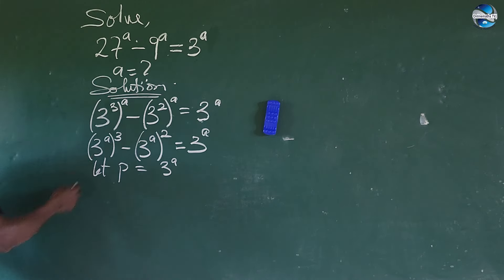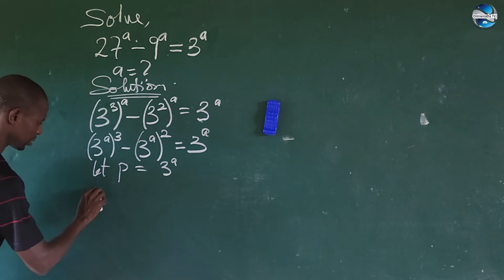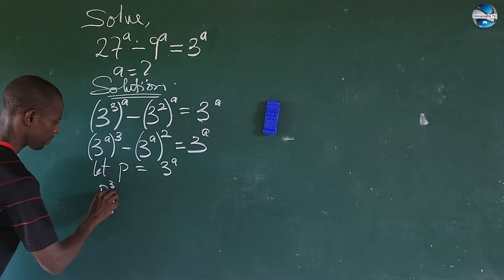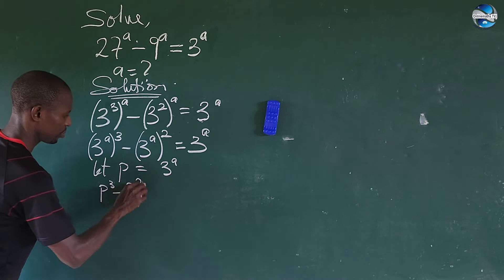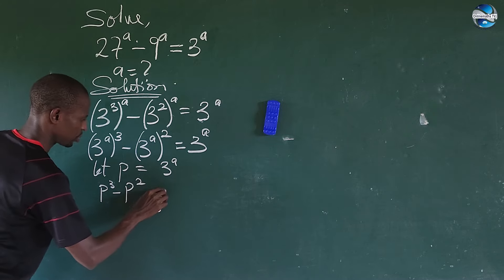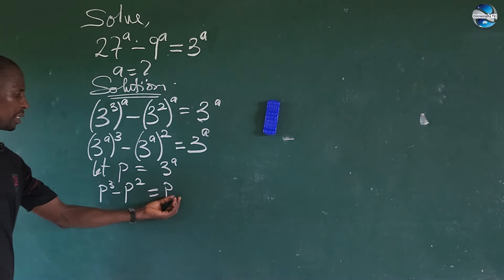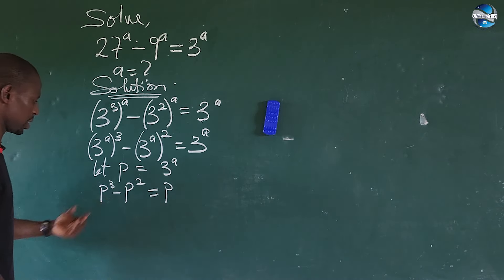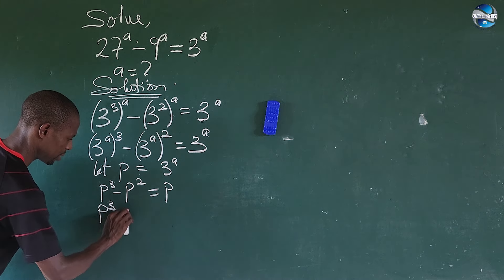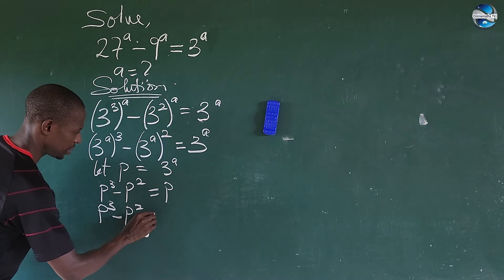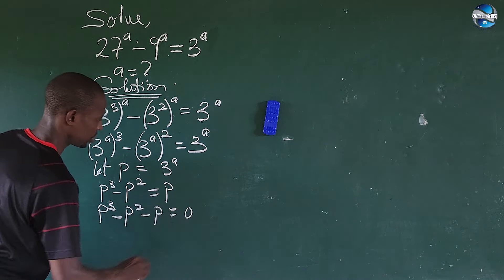So we can write the original equation as p^3 minus p^2 equals p. Moving everything to one side gives us p^3 minus p^2 minus p equals 0.